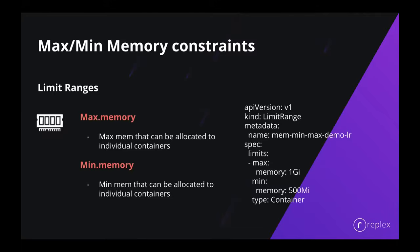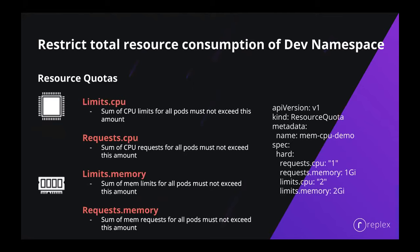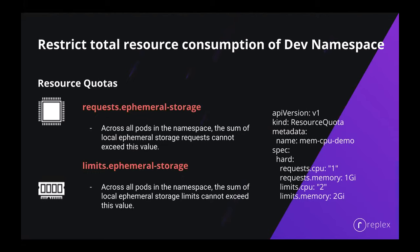The same goes for memory constraints — we can define minimum and maximum memory constraints for individual containers and define a range, and Kubernetes will ensure they fall within the defined range. Another native Kubernetes object we can use to control resource consumption is the ResourceQuota. With the ResourceQuota, we can control the total resource consumption of the developer namespace — defining an upper limit on the total amount of resources that can be consumed by all the pods running in the developer namespace. We can control total CPU and memory resource requests, and also control ephemeral storage.